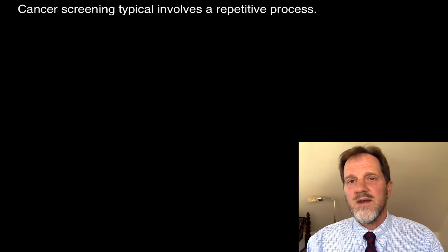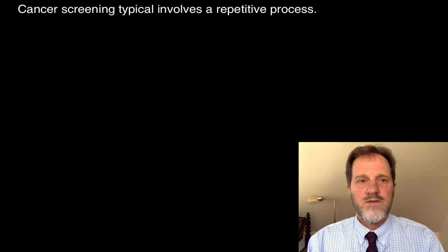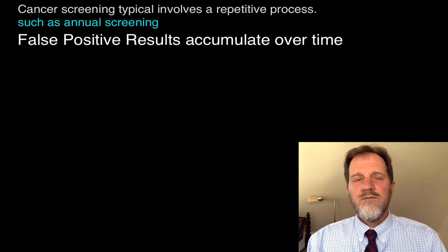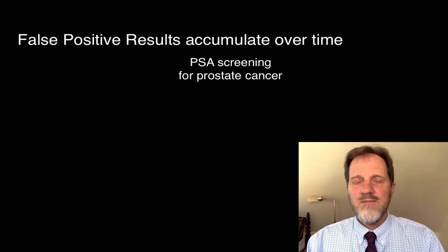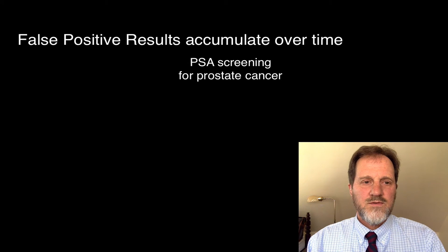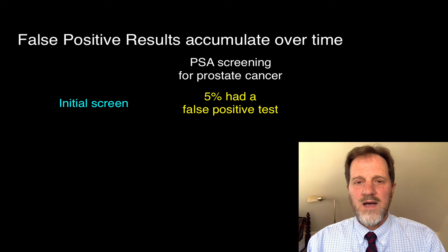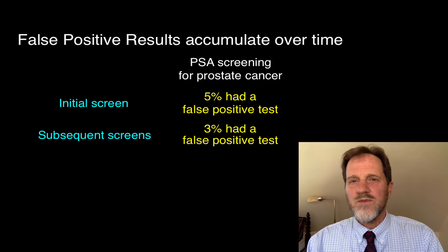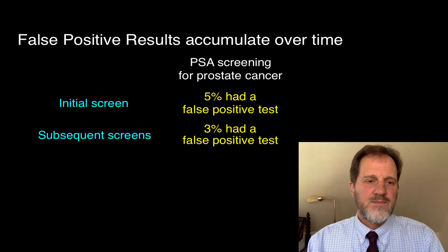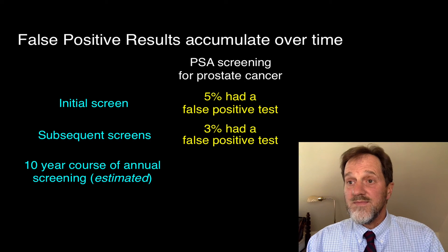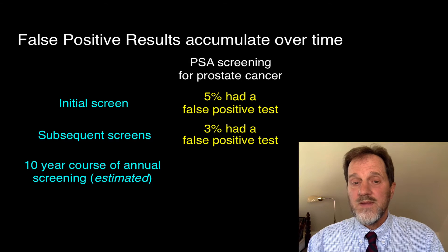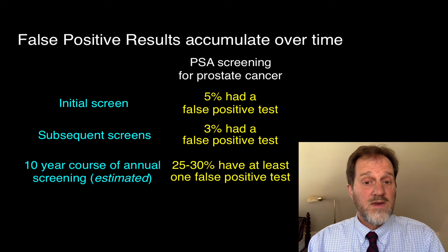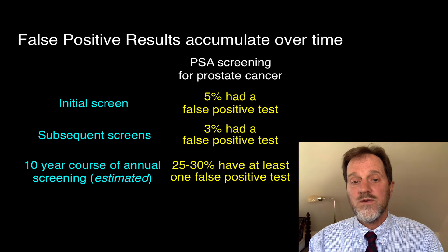Cancer screening typically involves a repetitive process — we screen people at regular intervals, such as annual screening, and false positive test results accumulate over time. From the PLCO, which examined PSA screening for prostate cancer — the US trial of prostate cancer screening — roughly 5% of men had a false positive test on the initial screen. On subsequent screens, that number went down to roughly 3%. In a 10-year course of annual screening, however, the estimated rate is that 25 to 30% of men will have at least one false positive test.